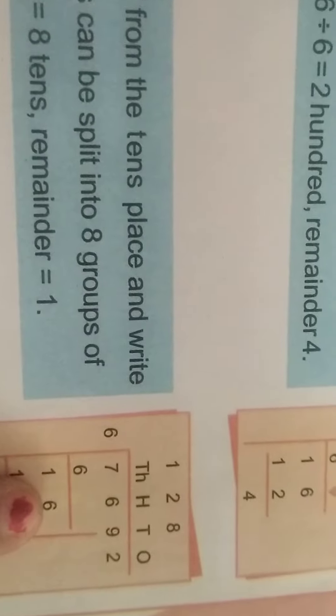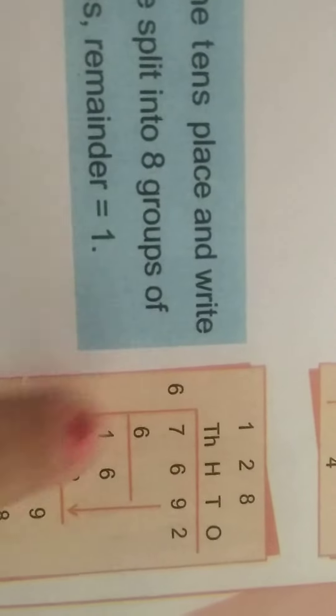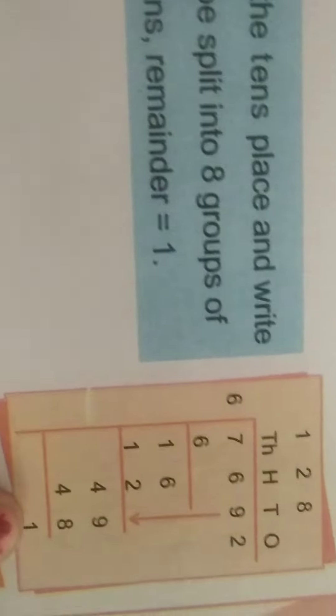Step 3: Bring down the 9 from the tens place and write it next to 4. 49 tens can be split into 8 groups of 6 tens. 49 divided by 6 equals 8 tens with remainder 1. 6 times 8 is 48, leaving remainder 1.